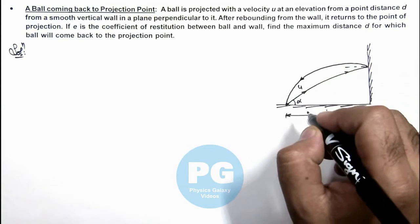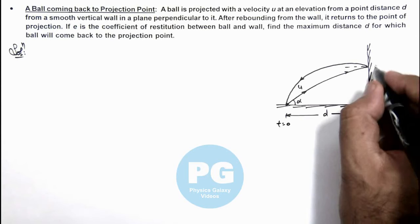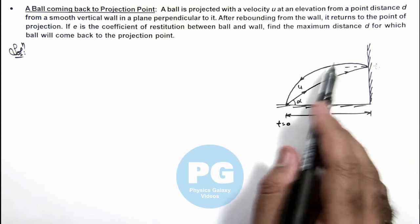Here we can see if t equals zero, ball is projected and say at time t₁, ball hits the wall.